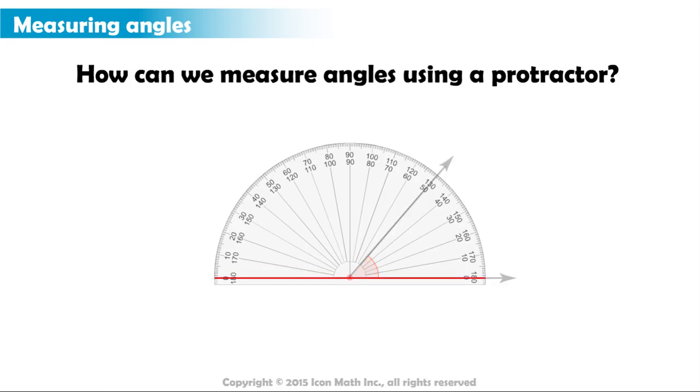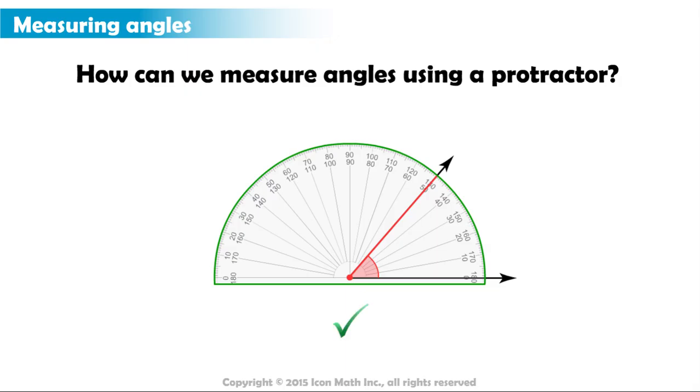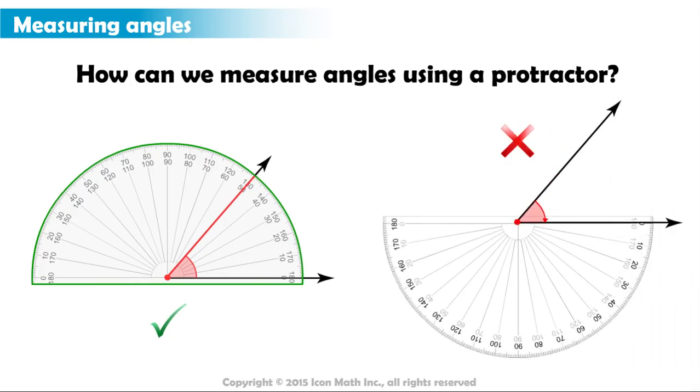As you can see here, this is the line on the protractor that needs to be aligned with one of the rays. Then, we make sure that the other one goes inside the half circle represented by the protractor, like this, and not like this.